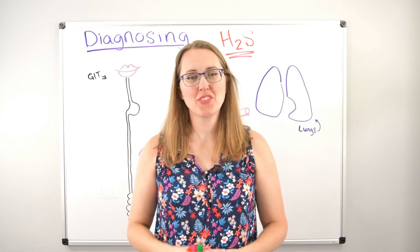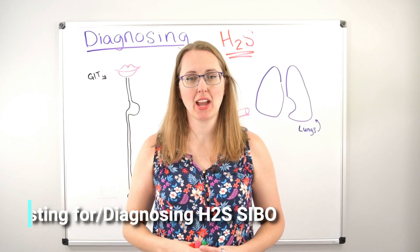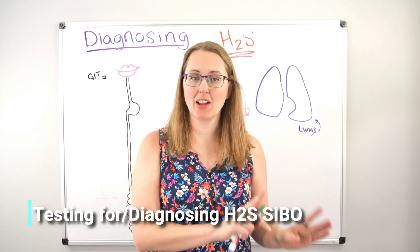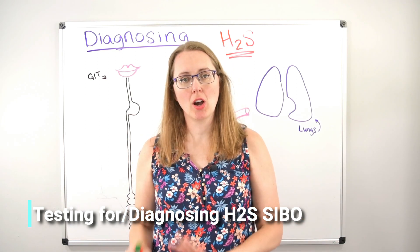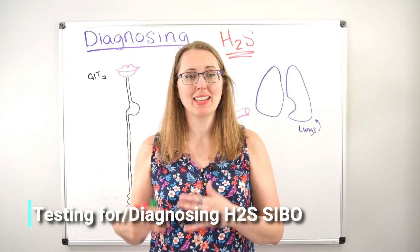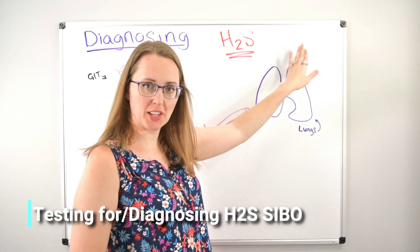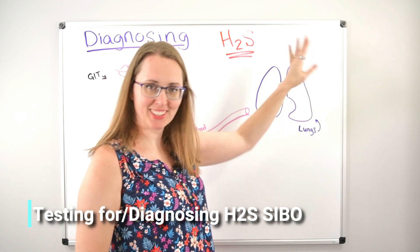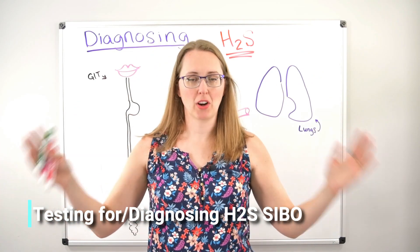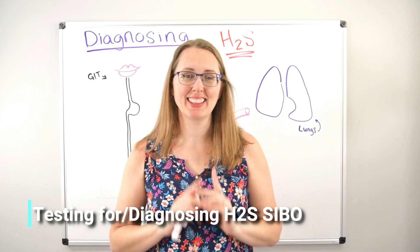Hi guys, and welcome back. In today's video, we're going to be talking about how to diagnose hydrogen sulfide overgrowth. This includes hydrogen sulfide SIBO, but we're also going to be talking about hydrogen sulfide overgrowth in the colon as well. That's why I specifically did not write the word SIBO here. Just think of this as hydrogen sulfide wherever it is in the tube.